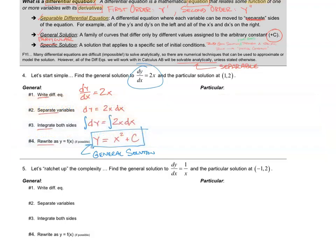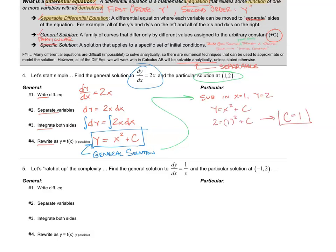Now let's find the particular solution through the point (1, 2). To find a particular solution, we substitute in our initial condition: x equals 1 and y equals 2. That gives us the value C equals 1. So our particular solution is y equals x squared plus 1, and that is the particular solution through the point (1, 2).